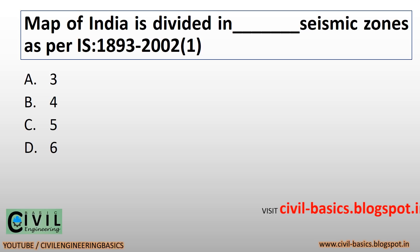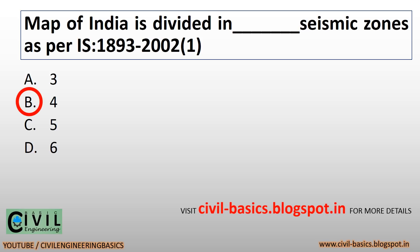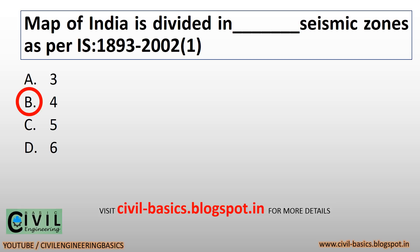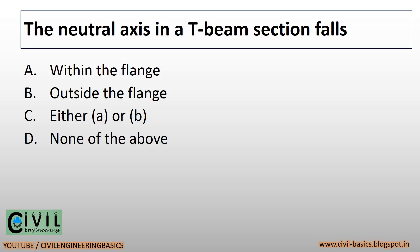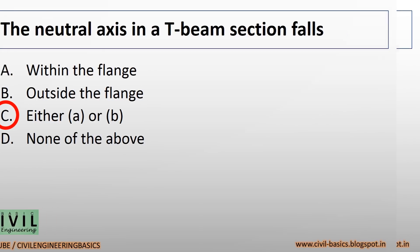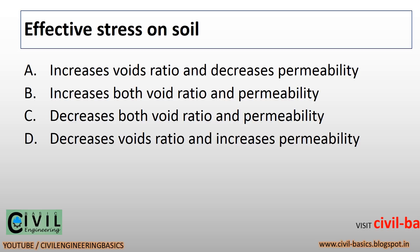The map of India is divided into four seismic zones as per IS code. The neutral axis in a T-beam section falls either within the flange or outside the flange. Effective stress on soil decreases both void ratio and permeability.